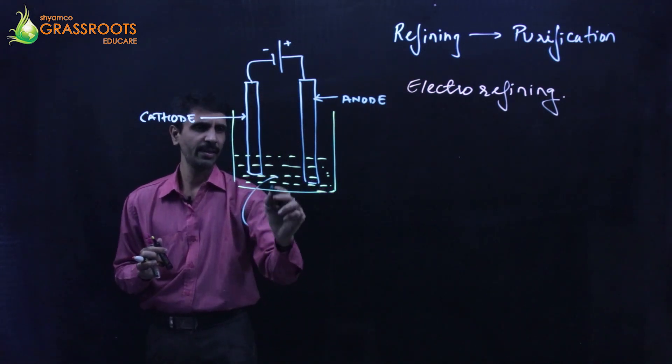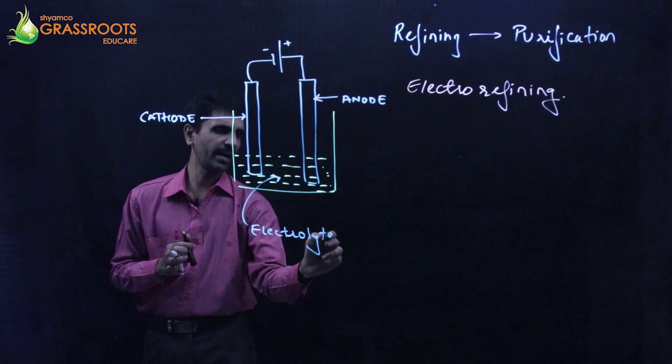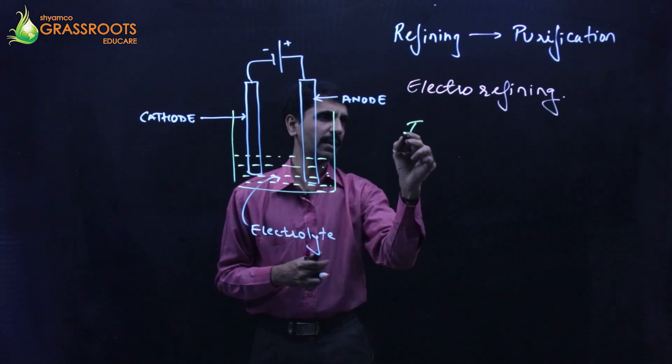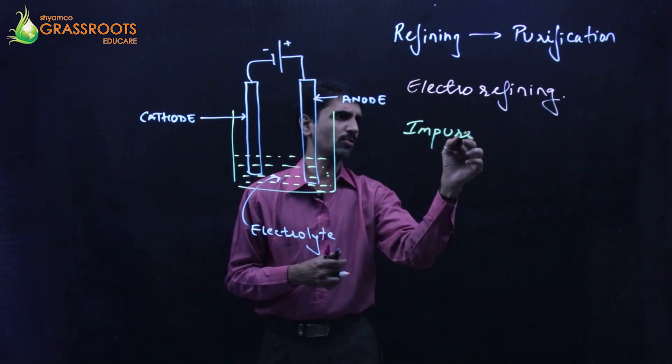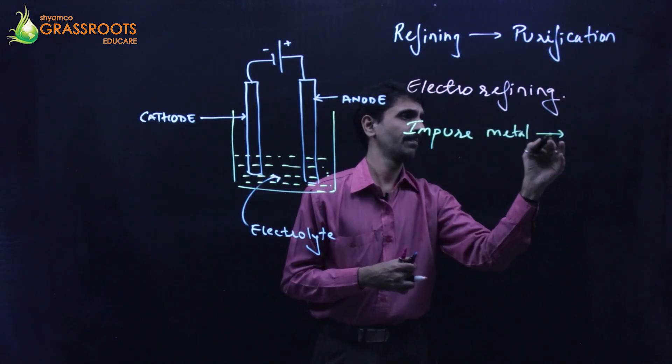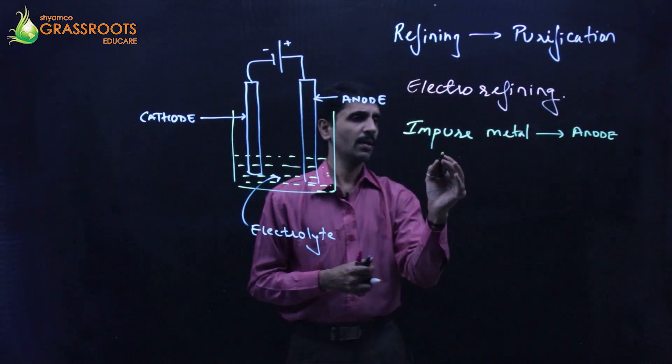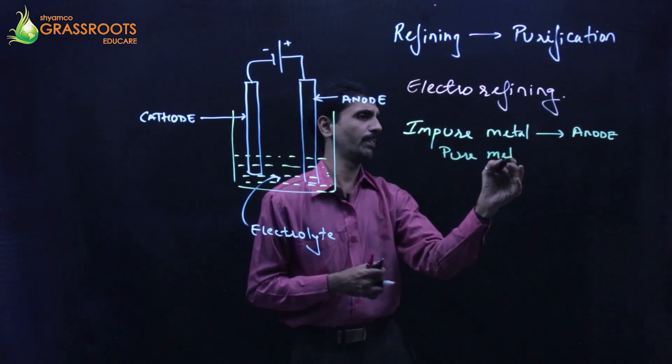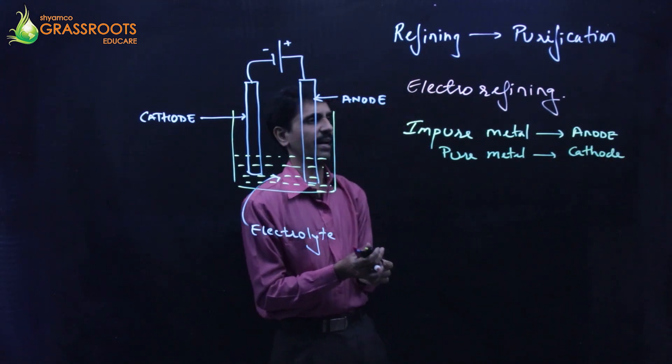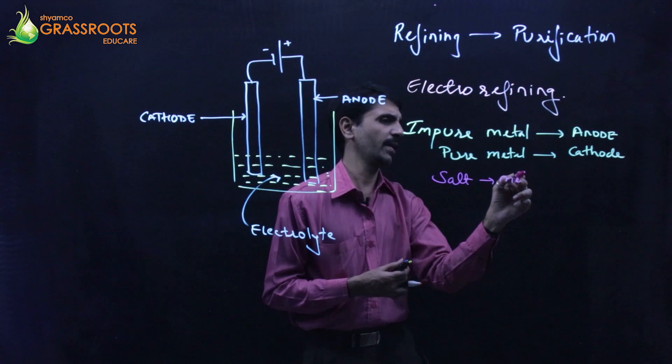The requirements that we have are electrolyte, cathode, anode, and the source of current. Now what we do is the impure metal - impure means 90 to 95% pure, or I call it crude metal - that impure metal is going to behave as anode. The pure metal is going to behave as cathode. And the salt of the metal is going to behave as an electrolyte.